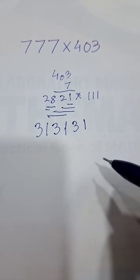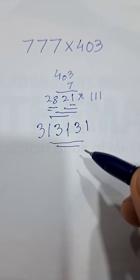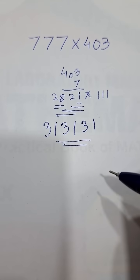Check your answer friends, 3 1, 3 1, 3 1. Is that the answer for triple 7 multiplied by 403?